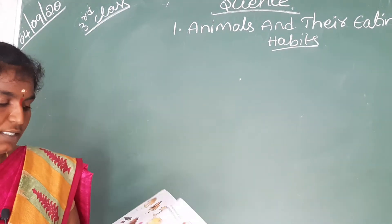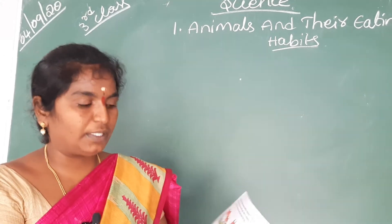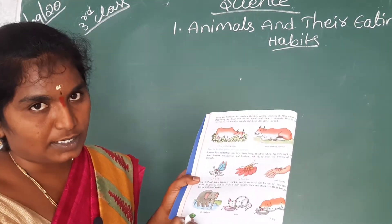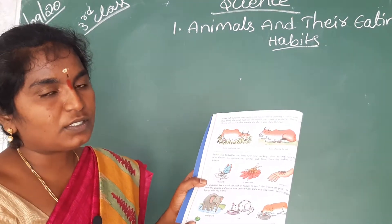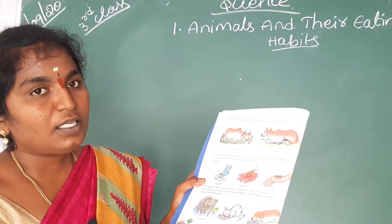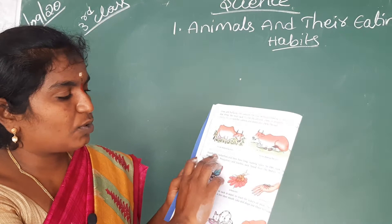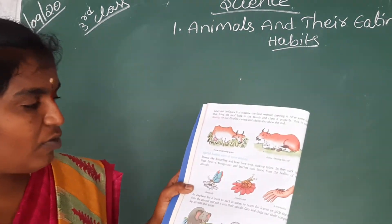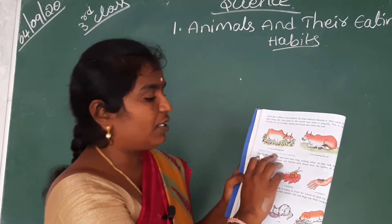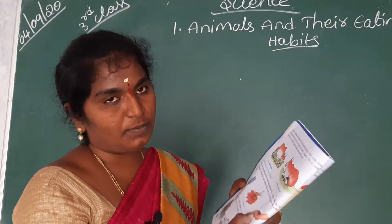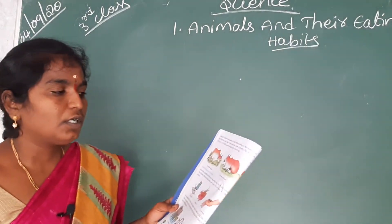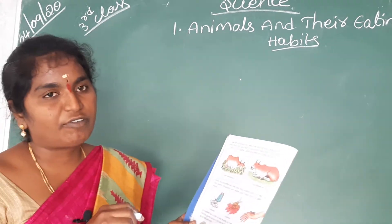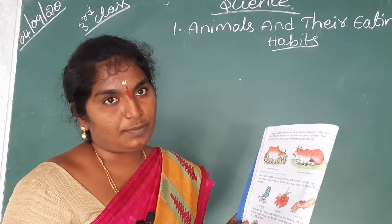Now we are going to look at page number 12. Open the textbook and try to understand what I am telling. While reading the textbook, you have to put your finger and move it along. Page number 12: special feeding parts of some animals. In previous classes we discussed about the food of animals and how they eat.